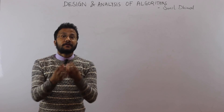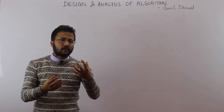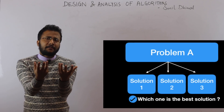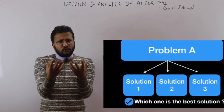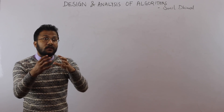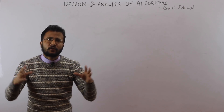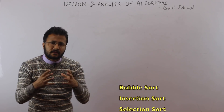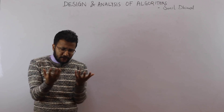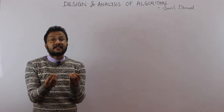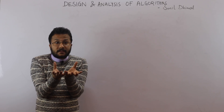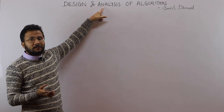If you are given a problem to solve, that problem can often be solved in different ways. For example, if I ask you to sort a list of numbers, there are various sorting algorithms: bubble sort, insertion sort, selection sort, merge sort, quick sort, heap sort, counting sort, and many more. You need to decide which is the best algorithm for your problem. This is where the analysis aspect of algorithms comes in.